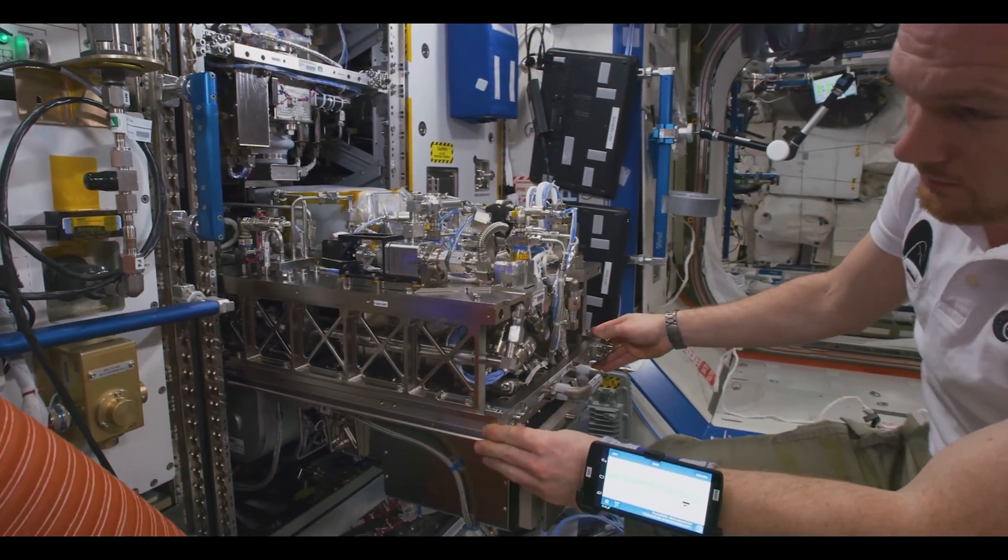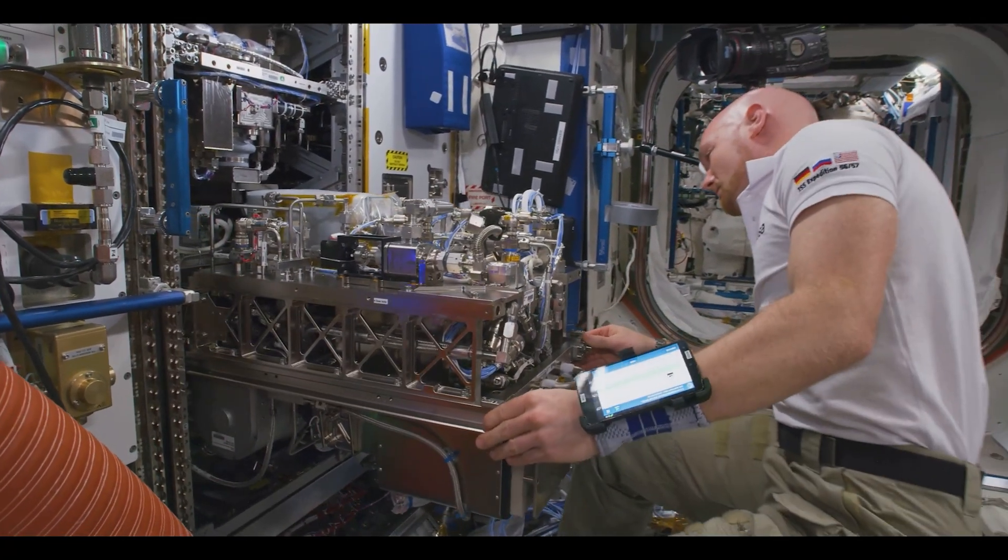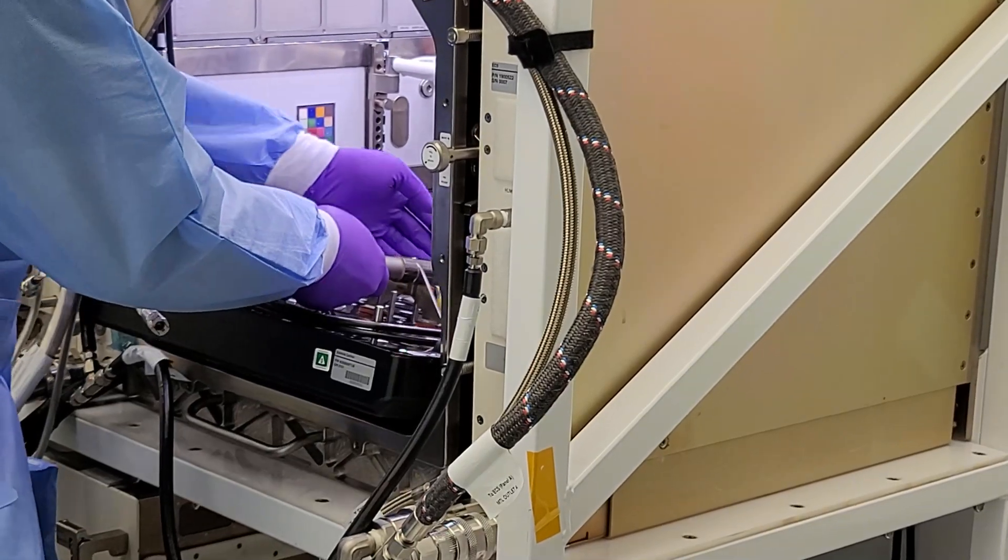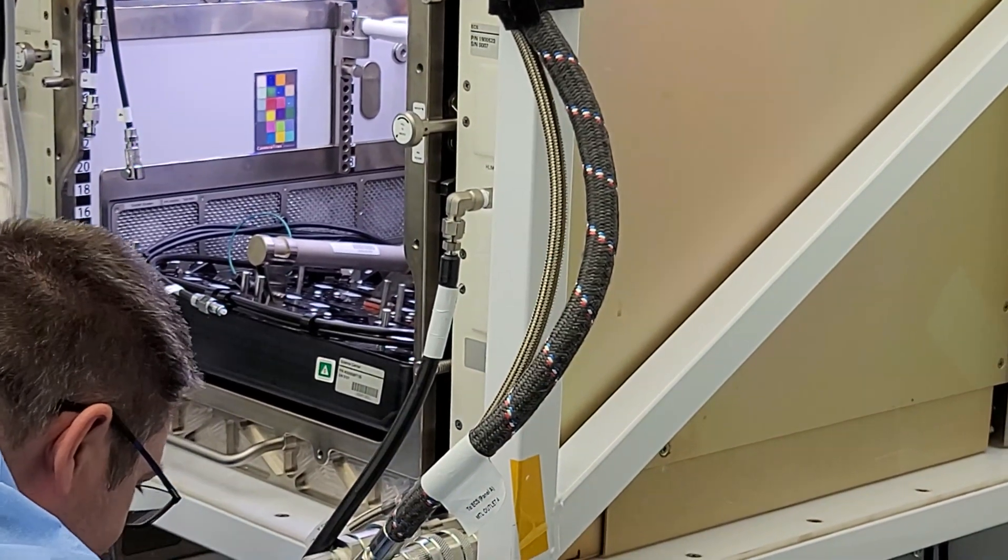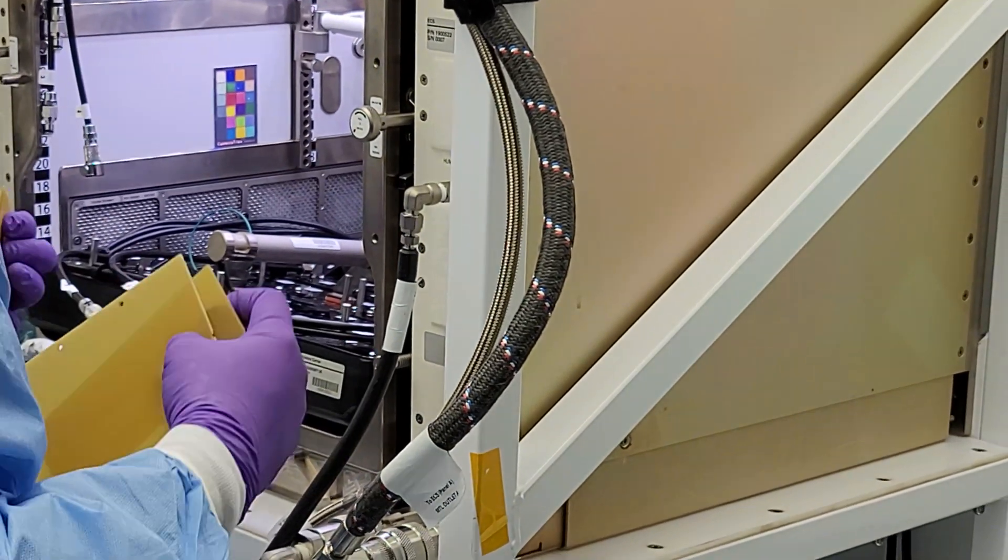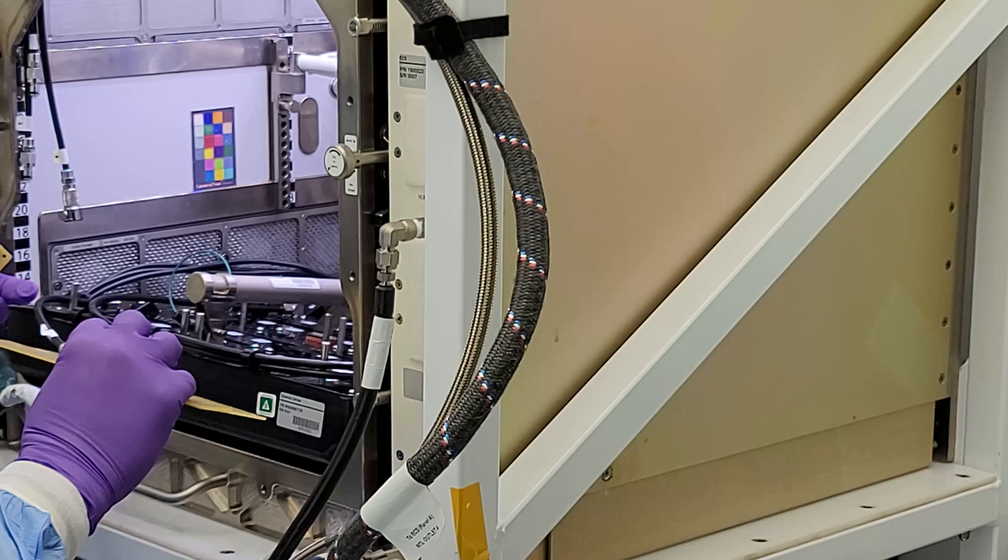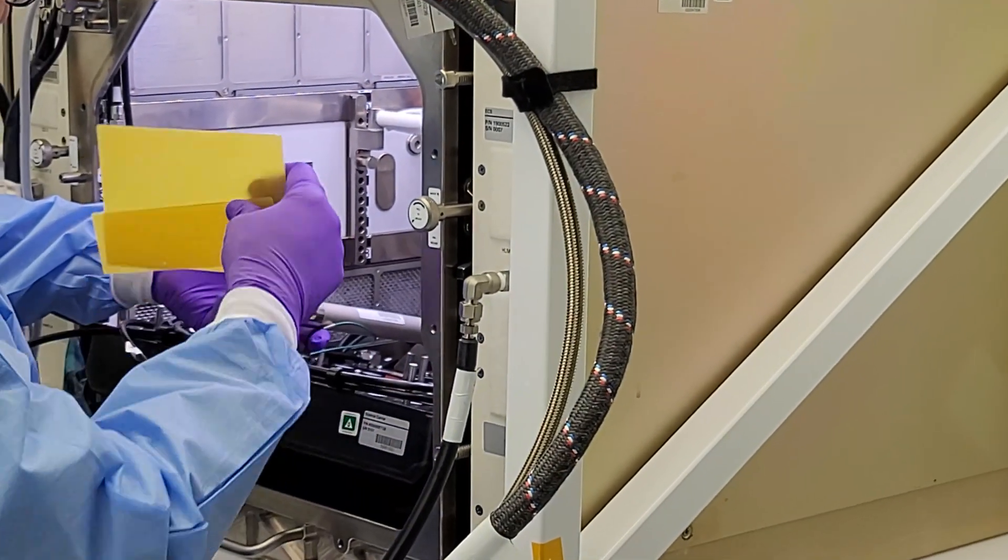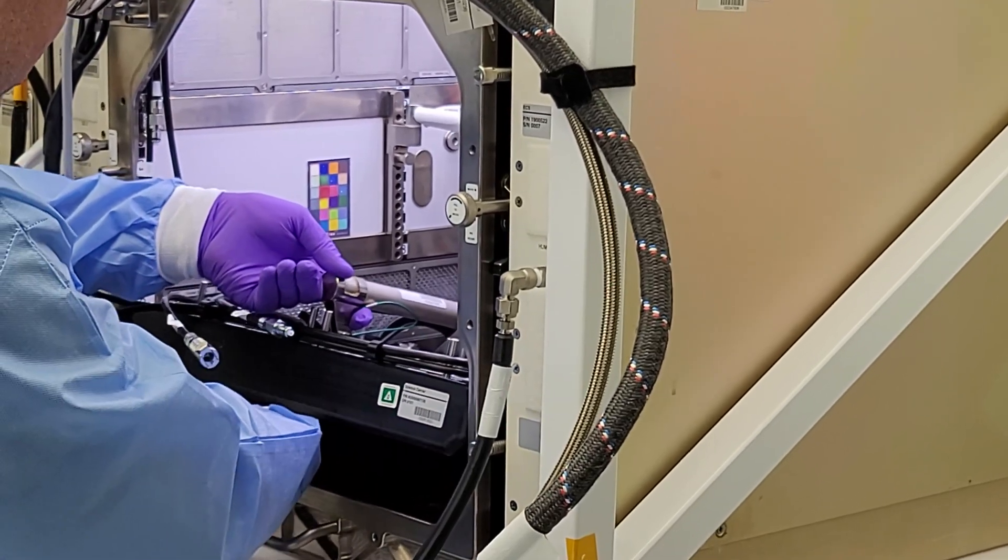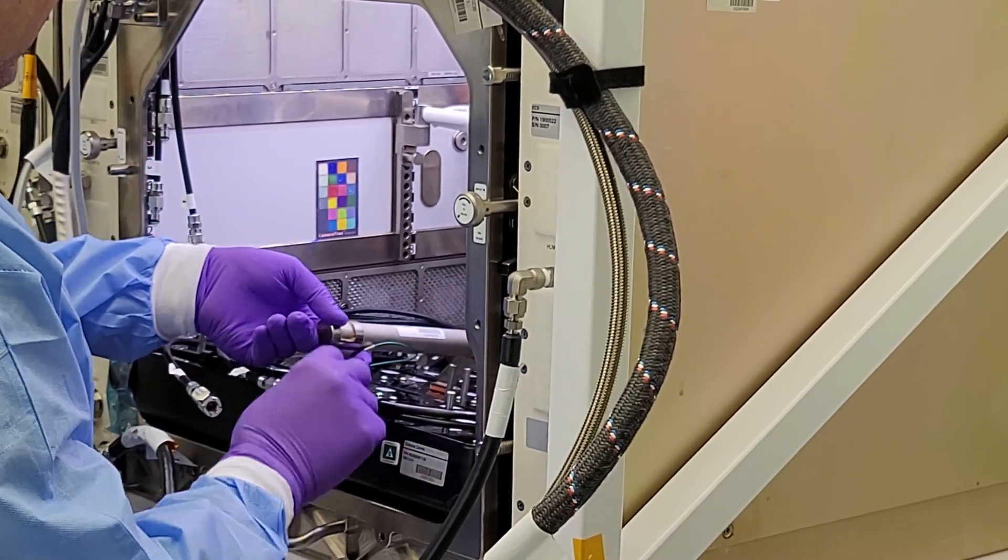Once the science team is ready to perform the experiment and it's the day of, we open the unit and we configure it to whatever conditions that the principal investigator and the science team want to have for the experiment. Once the science carrier goes into the unit we're able to maintain the chamber at whatever conditions that the science team want. From that point we're maintaining all the conditions through the FARMER on a laptop connection.